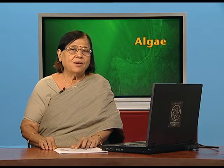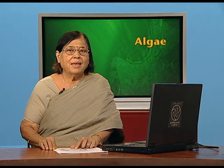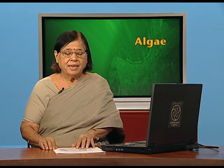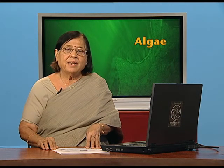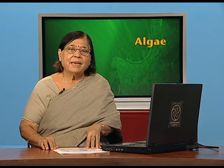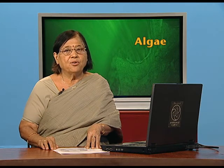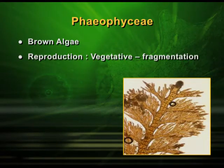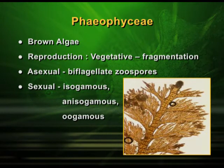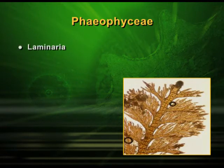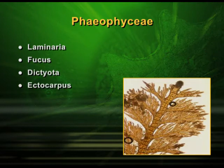Now we come to the second class of algae — Phaeophyceae, also known as brown algae. It is quite predominant in nature and does some very important things for us. It has chlorophyll A and C, and also carotene and xanthophyll. That means it has many kinds of pigments for photosynthesis and hence participates richly in photosynthesis. As far as reproduction in Phaeophyceae is concerned, it can be vegetative by fragmentation. It may be asexual by production of zoospores which are biflagellate and motile. Sexual reproduction will be either isogamous, anisogamous, or oogamous in different species. Good examples of Phaeophyceae are Laminaria, Fucus, Dictyota, Ectocarpus, and Sargassum.